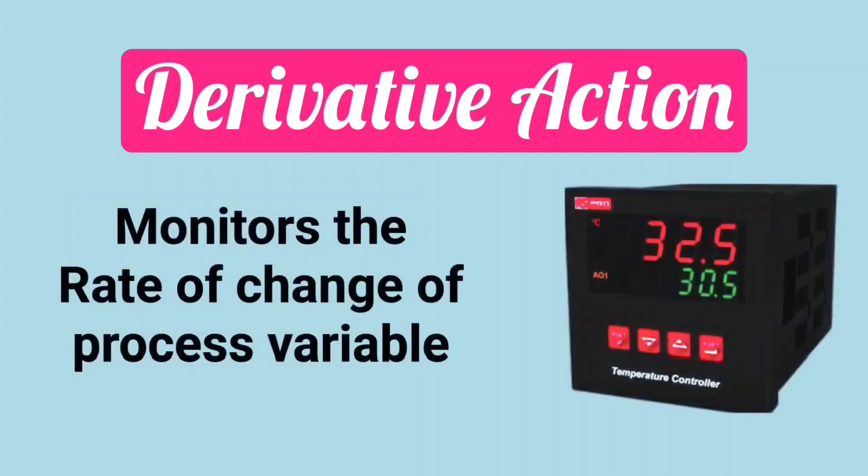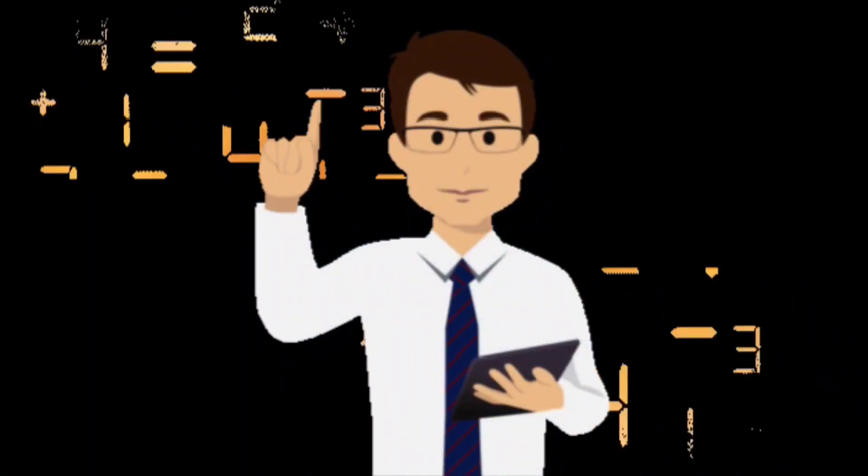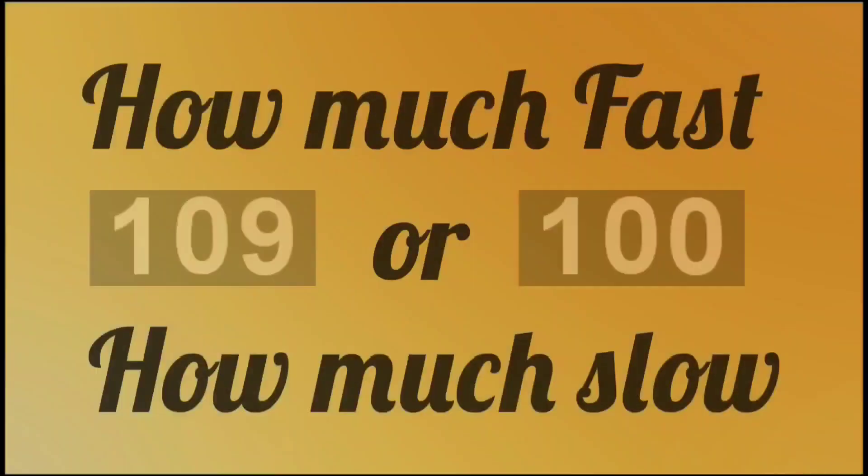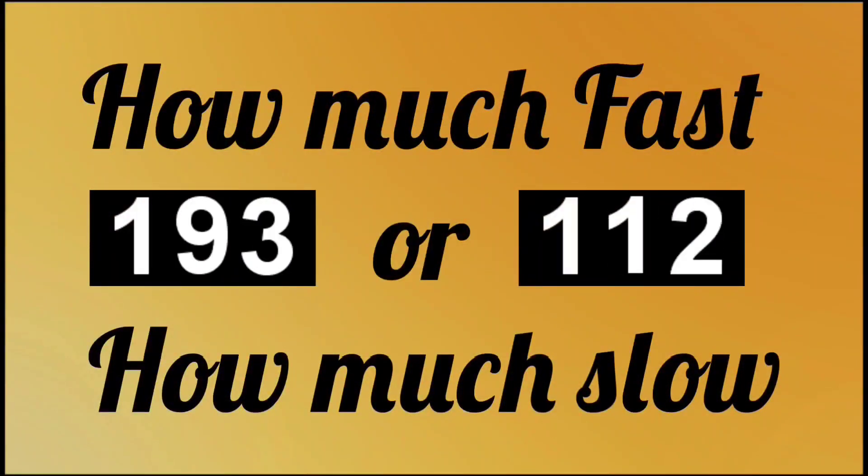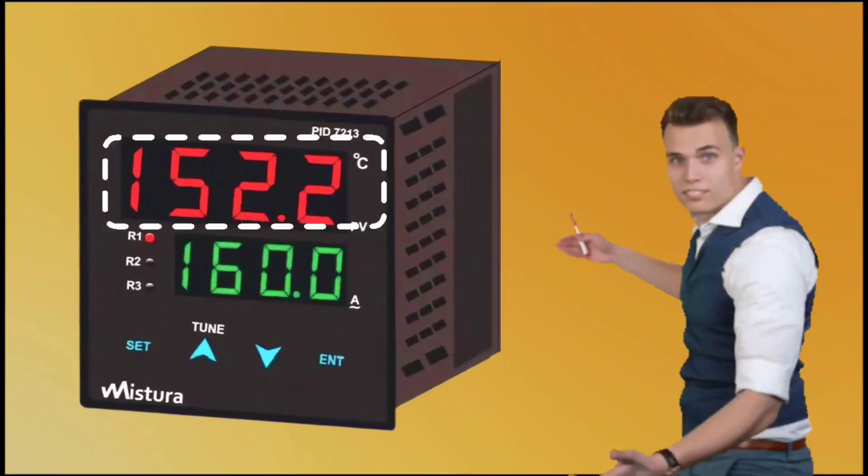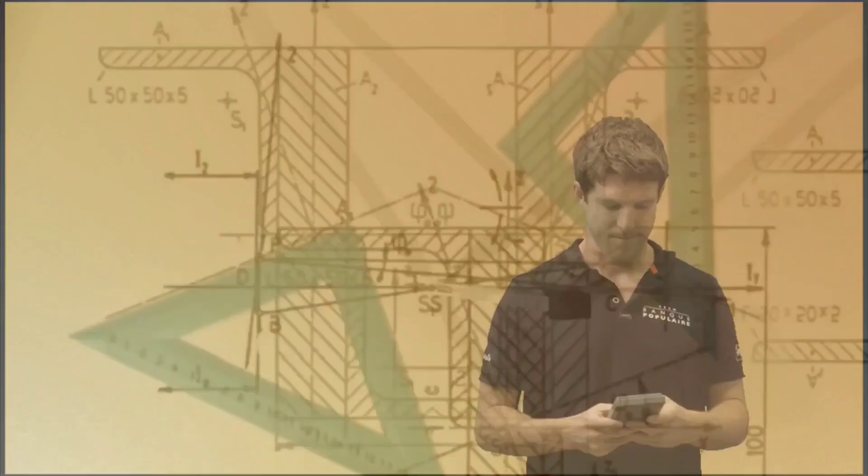Monitors the rate at which the process variable is changing. At what rate it is changing. It means how fast the change is happening or how slowly the change is happening. Let me explain this further.